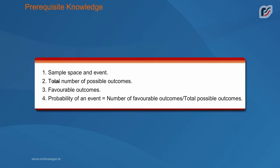Sample space and event. Total number of possible outcomes. Favorable outcomes. Probability of an event is equal to number of favorable outcomes by total possible outcomes.